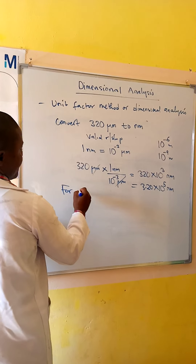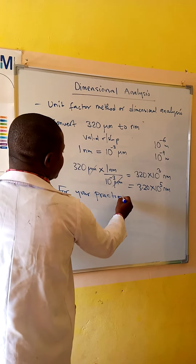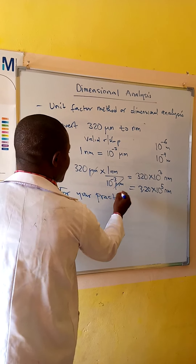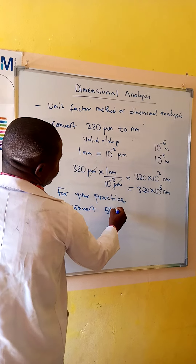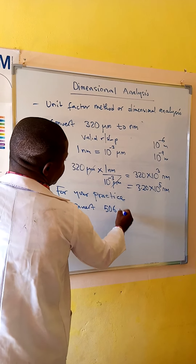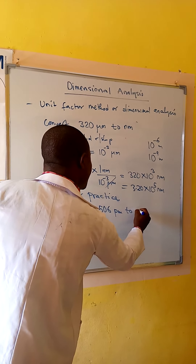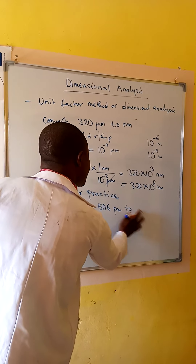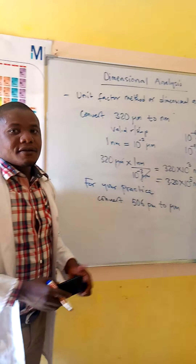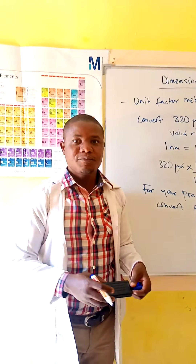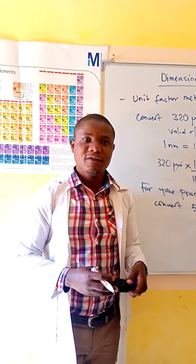For your practice, convert 5.06 picometers to micrometers. This is how we can use dimensional analysis to perform these calculations. In the next tutorial, we will look at the next topic. Thank you for watching.